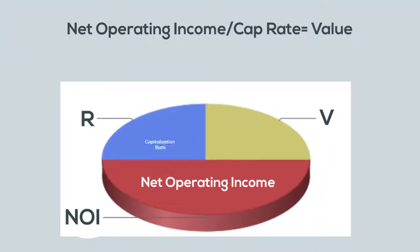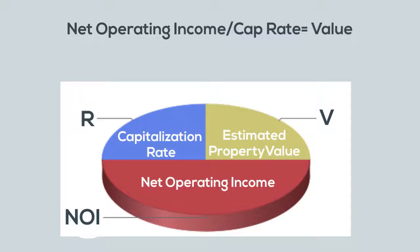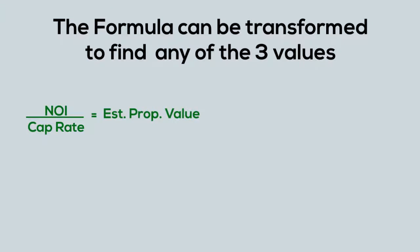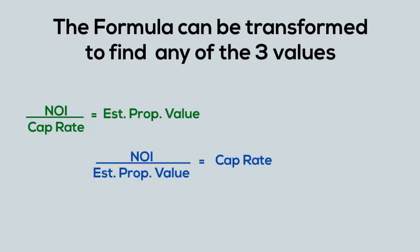Now that we've identified the steps involved, let's look at the formula. Net operating income divided by the capitalization rate equals the estimated property value. It is important to remember that the formula can be transformed to find any of these three values — the estimated property value, the capitalization rate, or the income — as long as you have at least two of the values.